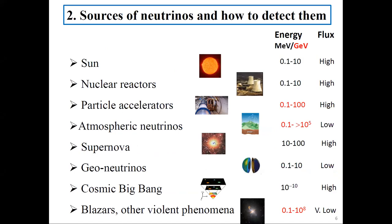If you want to study neutrinos, you have to know the sources and how to detect them. The Sun is one of the most prolific sources — about 60 billion electron-type neutrinos pass through every square centimeter per second, so the tip of your finger has 60 billion neutrinos passing through it every second. However, in a whole lifetime, probably only one will interact with the human body, so neutrinos are pretty safe. The energies are low — MeV scale.